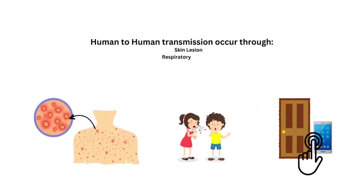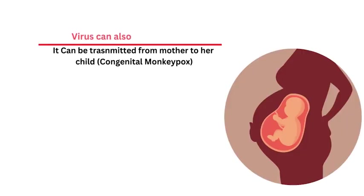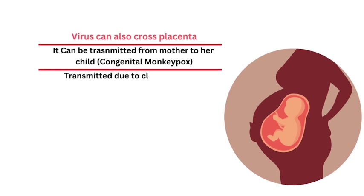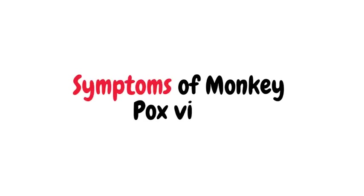Human-to-human transmission can occur from skin lesions of an infected person, respiratory secretions, or touching of contaminated objects. The virus can also cross the placenta, meaning it can be transmitted from mother to child, which can lead to congenital monkeypox, or during close contact during and after birth.